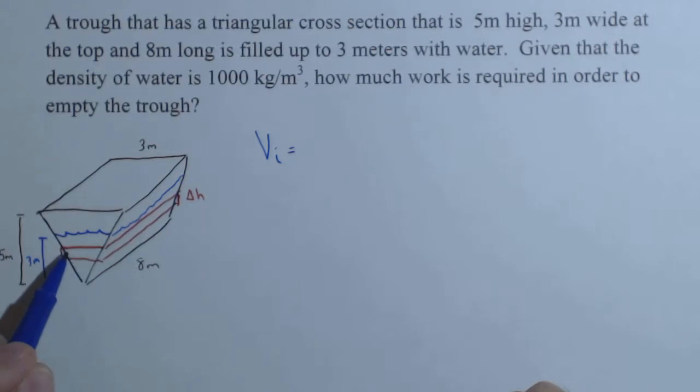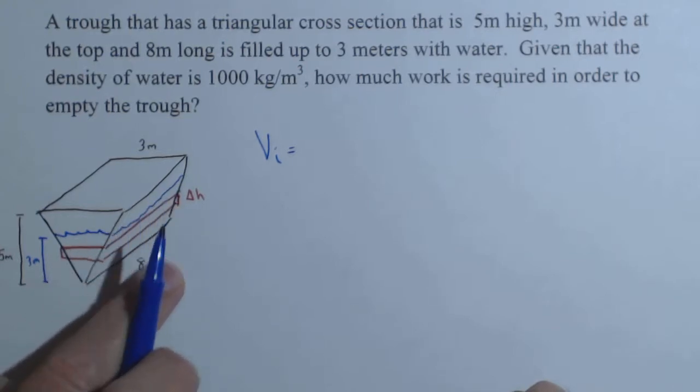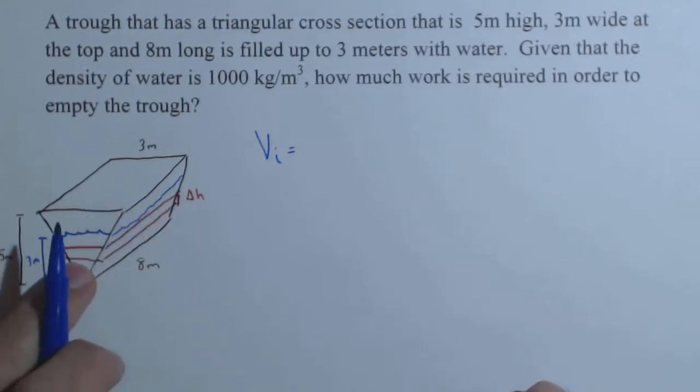If we look at its shape, it's a box with a thickness of delta H, and it's got a length of 8, and it's always 8. The one thing that's changing is right there, so we need to introduce a variable for that. We can call it whatever we want.